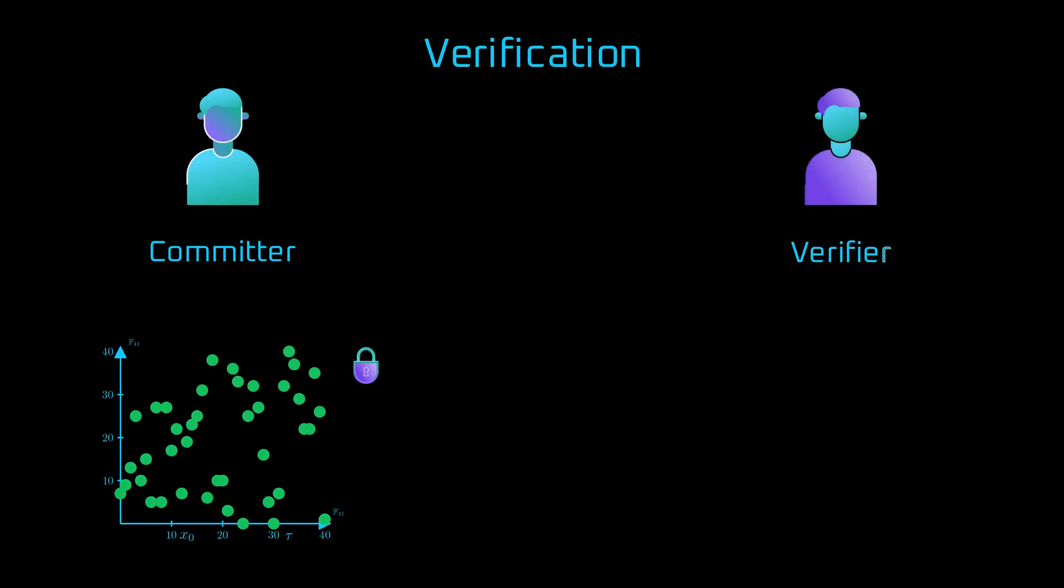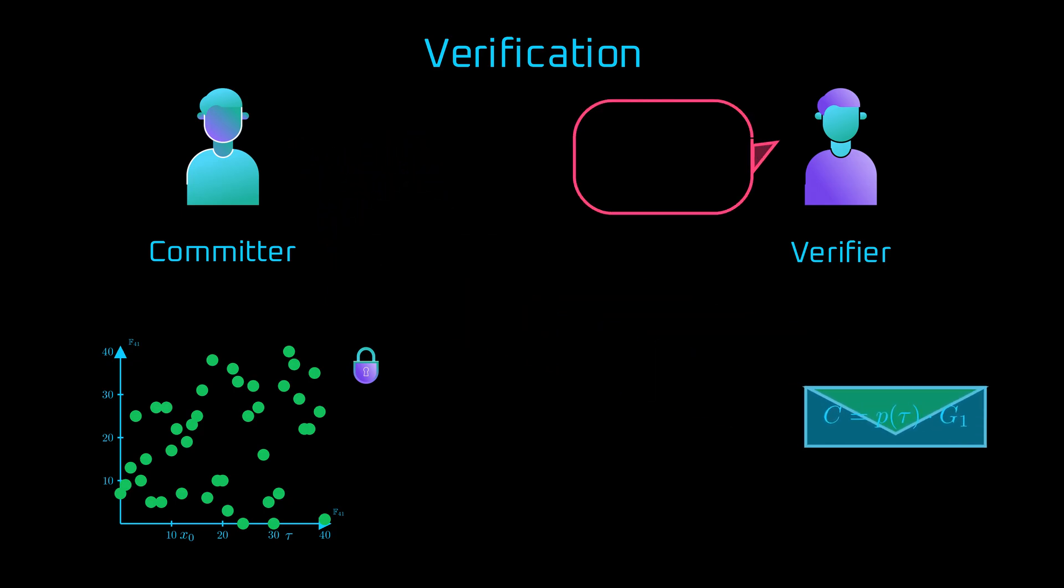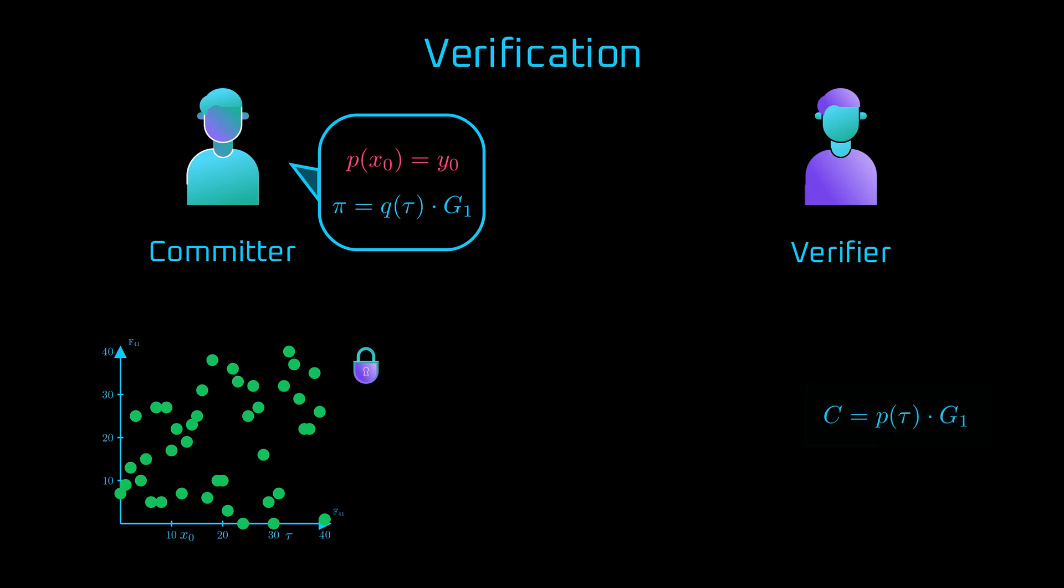Let's look at it all for one last time. We have the committer, who wants to keep the polynomial hidden, so he sends just an encrypted evaluation of it to the verifier. The verifier then asks for the value of the polynomial for a specific x0, to verify that it belongs to it. And, with the evaluation, the committer sends a proof, which is an encrypted value of the quotient polynomial at tau.